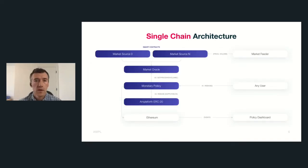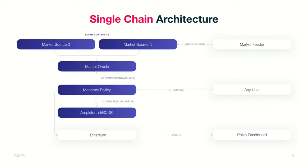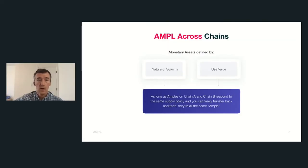Here's how it works on a single chain — there are only a few different components. There's the supply policy in the center. The action that rebalances the supply we call rebase, and anyone is allowed to call that. It gets data from the Oracle, which medianizes from many different input feeds. Then there's the token itself that is directed by the supply policy, and that's what people transact with and make contracts with.